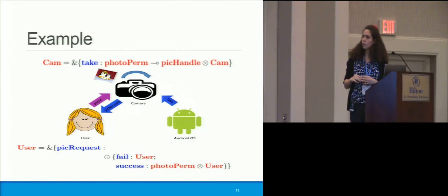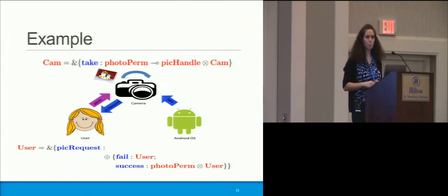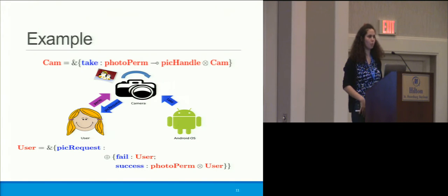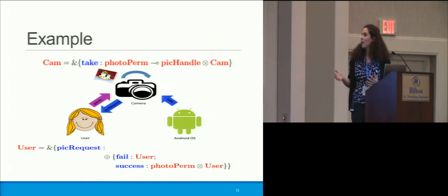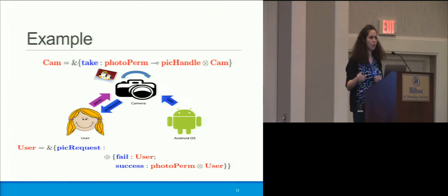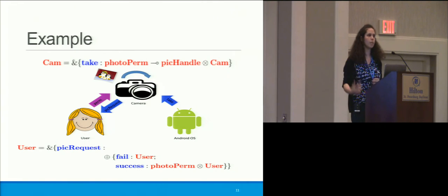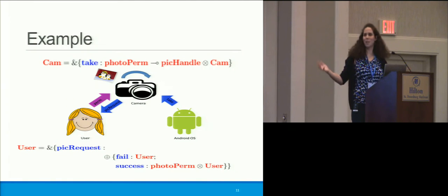Let's look at an example based on a real life problem I have. I keep my phone in my pocket and my camera is always taking pictures without my knowledge, so I end up with a ton of pictures of I don't know what. I would really like for my camera to ask me every time whether I'm sure I want to take a picture. So I can model this with session types.